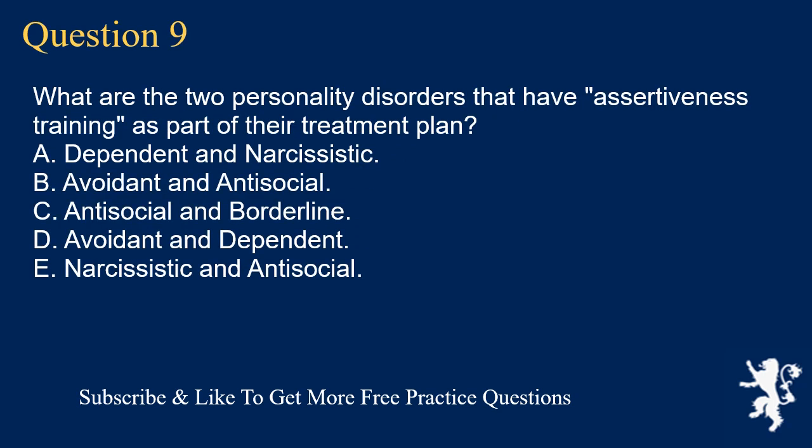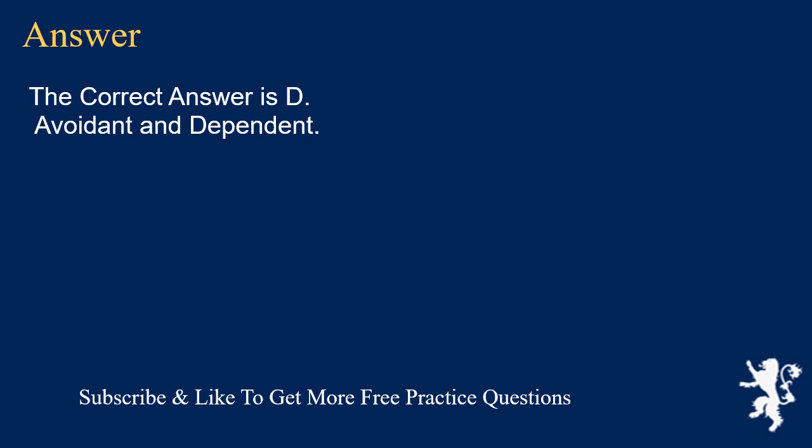Question 9. What are the two personality disorders that have assertiveness training as part of their treatment plan? A. Dependent and narcissistic. B. Avoidant and antisocial. C. Antisocial and borderline. D. Avoidant and dependent. E. Narcissistic and antisocial. The correct answer is D. Avoidant and dependent.